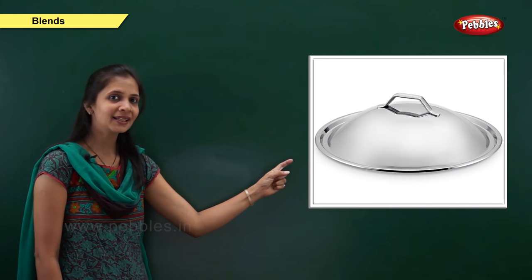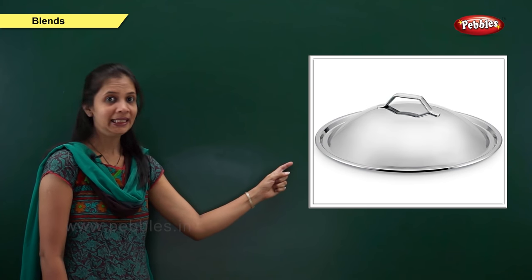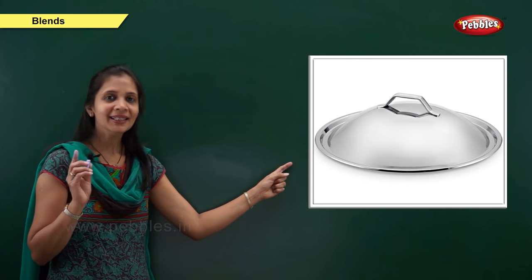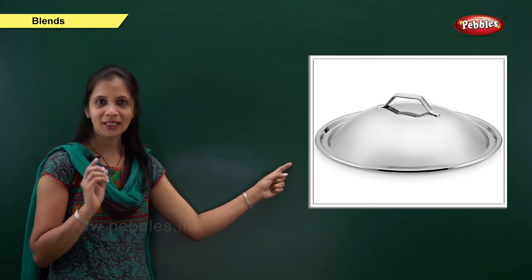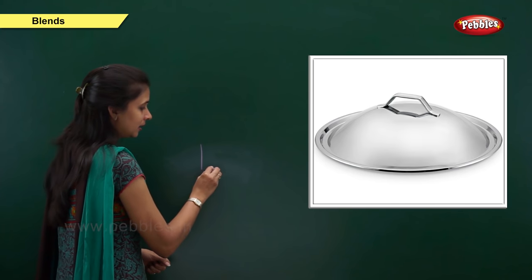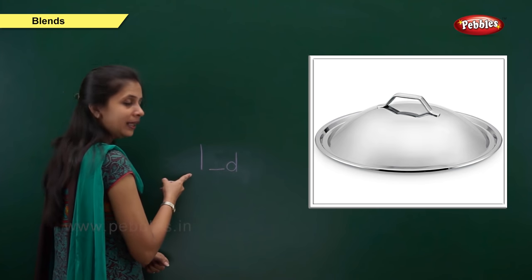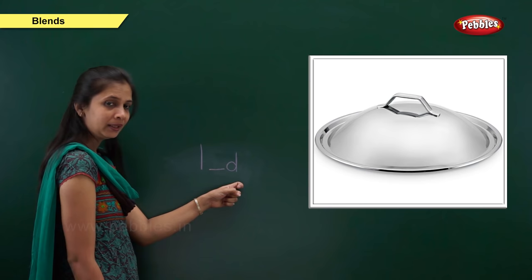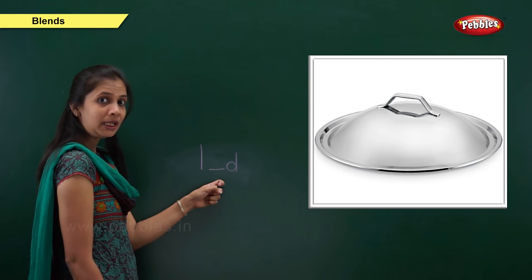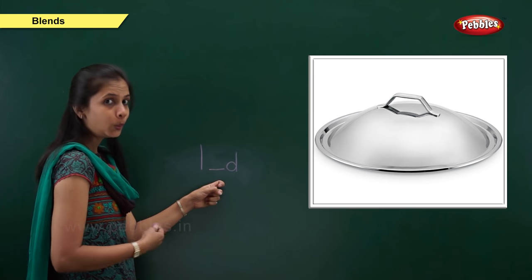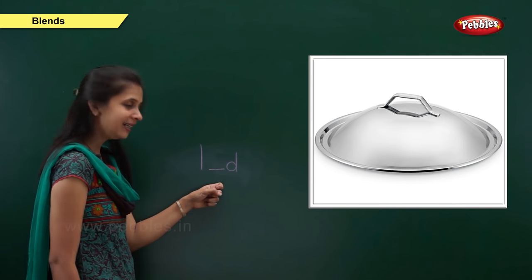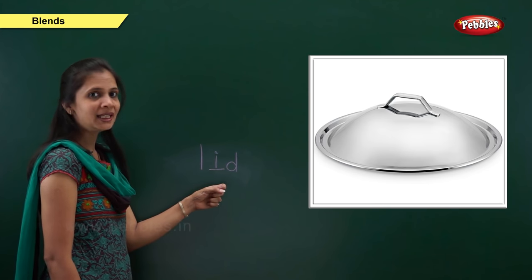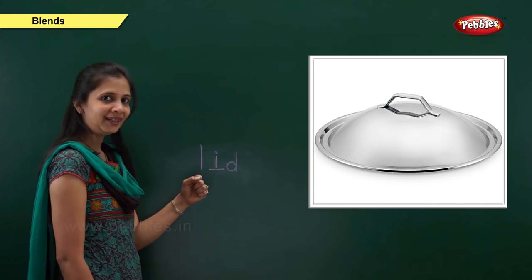Next one. Which picture is this? Yes, it is lid. What is the sound of this word? It is l, e, d. When the beginning sound is 'l', the letter is l. When the ending sound is 'd', the letter is d. What about the middle sound? It is 'e'. Which letter? Here it is i. The vowel is i. So: l, i, d — lid.